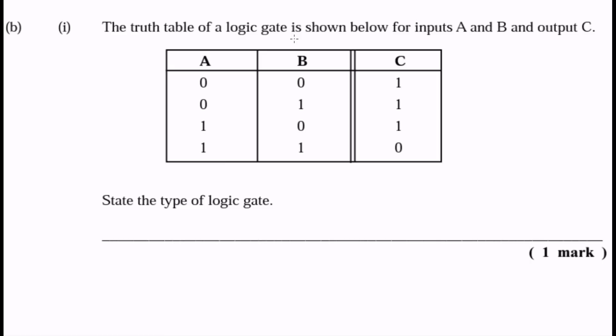We're given a truth table showing inputs A and B and an output C. The truth table is as follows: an input of 0 and 0 gives an output of 1. If you have 0 and 1, you get 1. 1 and 0 also produces 1, but 1 and 1 produces 0.